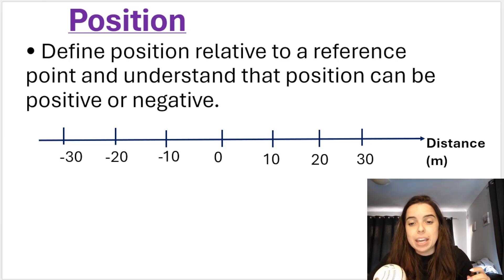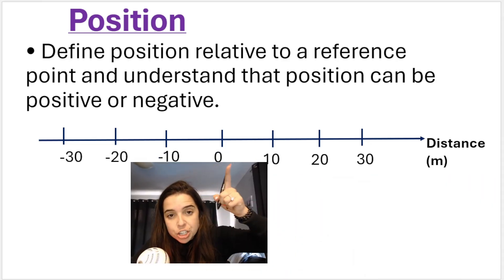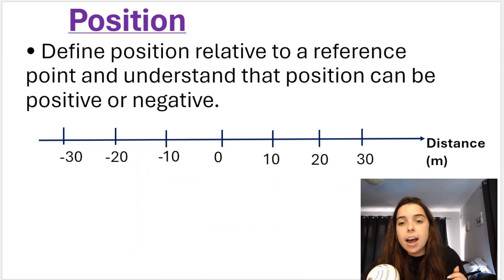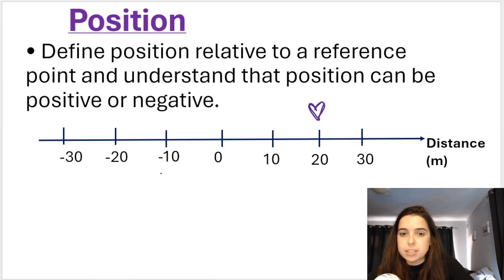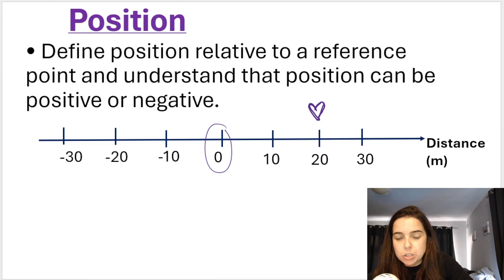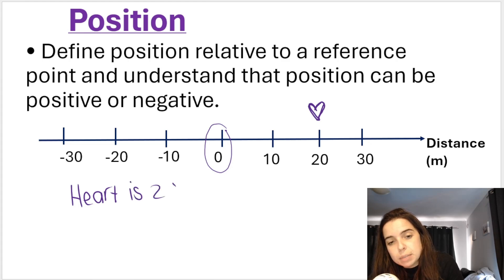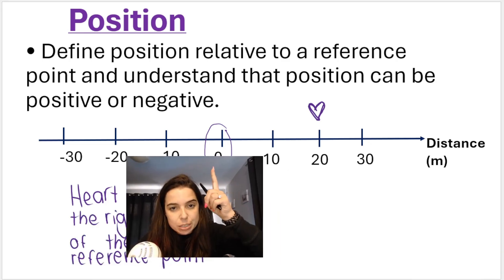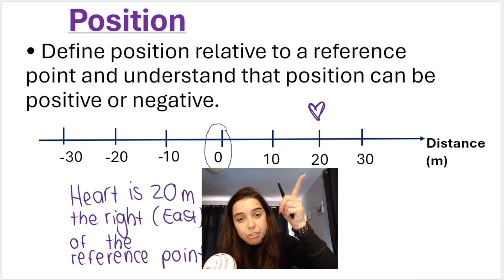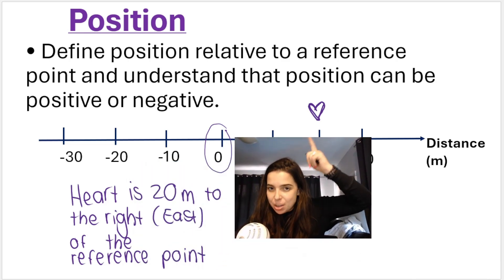In this example, if this point over here is my origin or reference point and I ask you for the position of the heart I've drawn on screen, you can say the heart is 20 meters to the right of the reference point. You can also say east, because we start at the reference point and go 20 meters in the direction of east to reach the heart.